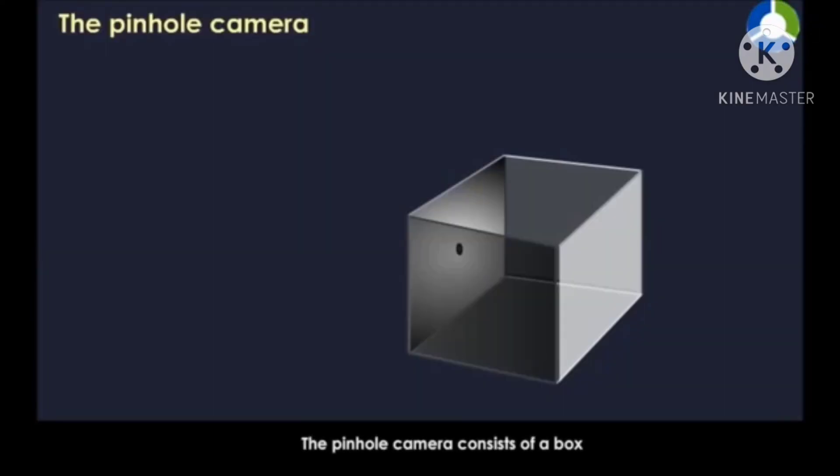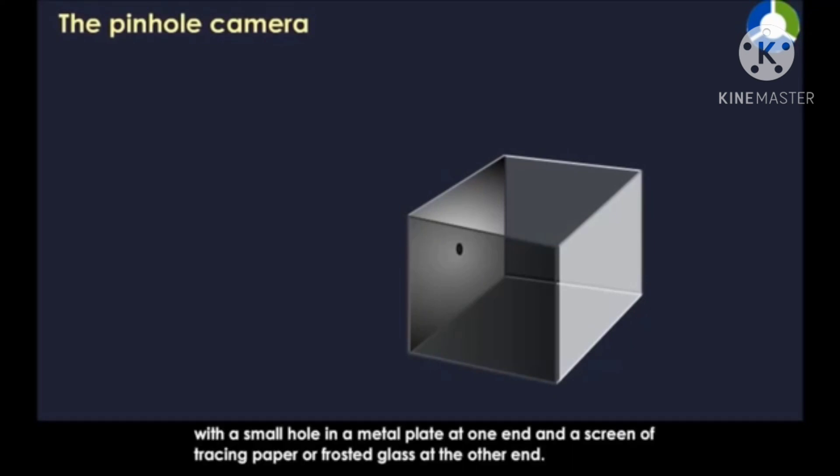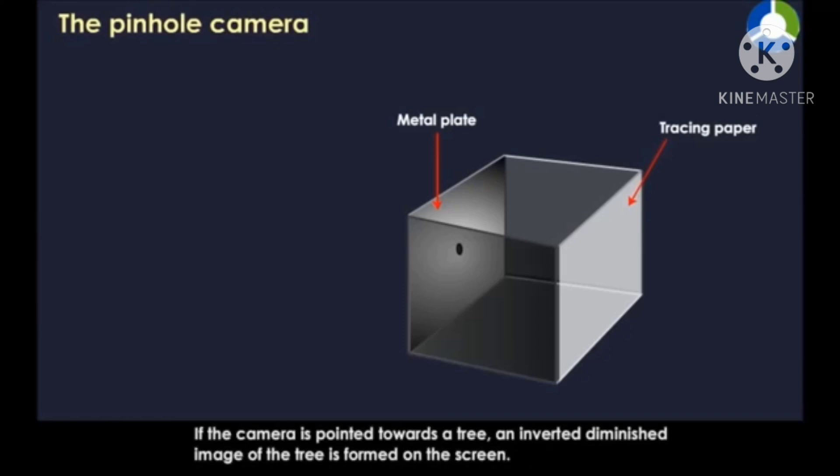The pinhole camera consists of a box with a small hole in a metal plate at one end and a screen of tracing paper or frosted glass at the other end. If the camera is pointed towards a tree, an inverted diminished image of the tree is formed on the screen.